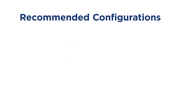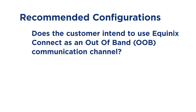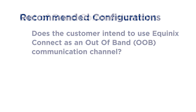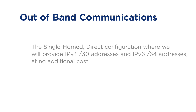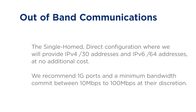Recommended configurations — ask the customer this question: Does the customer intend to use Equinix Connect as an out-of-band communication channel? If using it for out-of-band communications, select single-homed direct configuration. We provide IPv4 /30 addresses and IPv6 /64 addresses at no additional cost to configure their equipment to our routers. They choose the port and bandwidth, but we recommend one gig ports with a minimum bandwidth commit between 10 Mbps to 100 Mbps at their discretion.